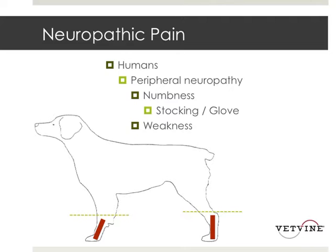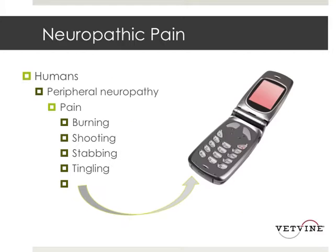In some instances it can be accompanied with weakness, but not always. So again, in our animal species patients, if they are simply numb, we may never actually know that from them. In addition to this phenomenon of numbness and potentially weakness, there's an associated pain, and that's the focus of our discussion tonight.